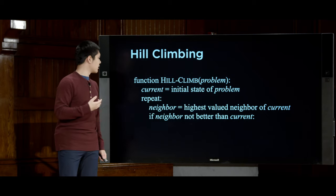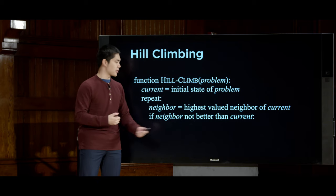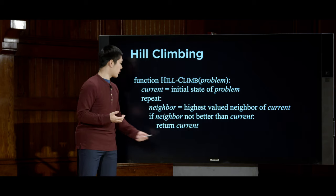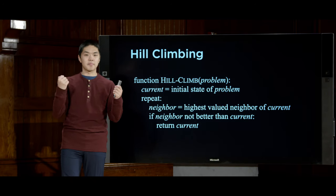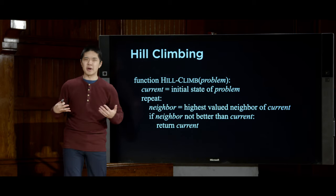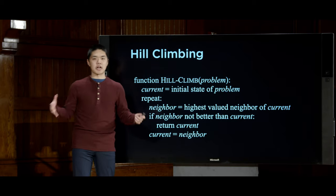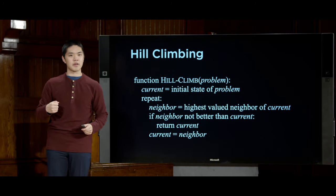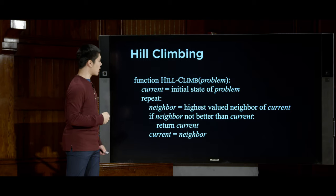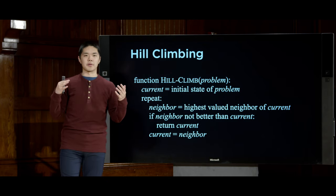The key question is: is this neighbor better than my current state? If the best neighbor found is not better than the current state, the algorithm terminates and returns the current state — if none of my neighbors are better, we stay where we are. Otherwise, if the neighbor is better, we set current equal to neighbor and repeat, continually moving to a better neighbor until none of my neighbors are better.